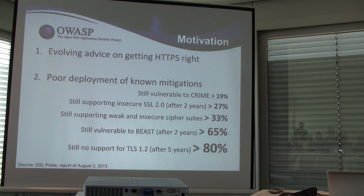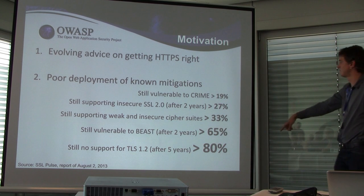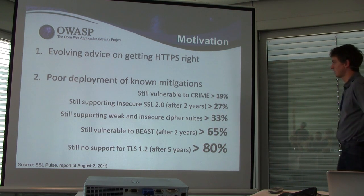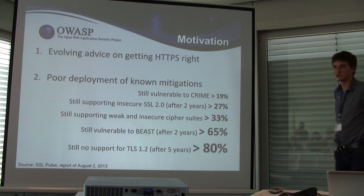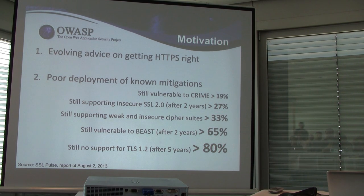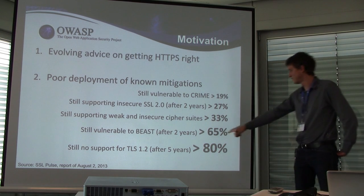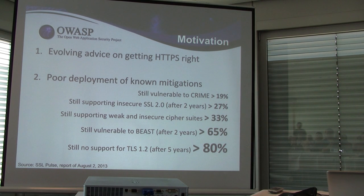To see the current state, we looked at the SSL Pulse report of August 2nd. SSL Pulse scans HTTPS servers to see what ciphers they support and what protocol problems appear. The numbers show poor deployment of known mitigations. For example, SSL 2.0 — known to be insecure for years — is still supported by nearly one third of servers. And TLS 1.2, which has the only really secure ciphers, is still not supported by more than 80% of servers five years after release.